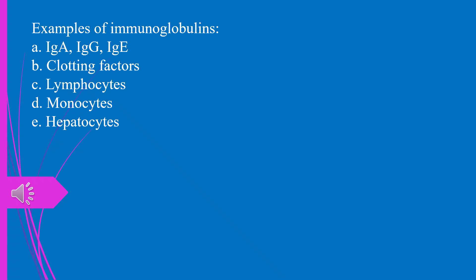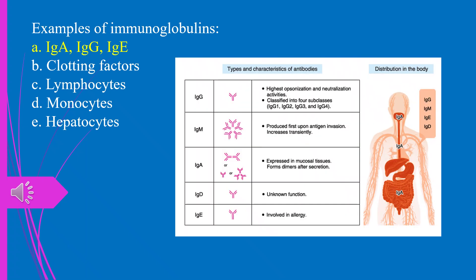Examples of immunoglobulins, A. IgA, IgG, IgE. B. Clotting factors. C. Lymphocytes. D. Monocytes. E. Hepatocytes. The answer is A. IgA, IgG, IgE.